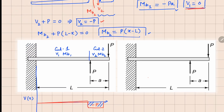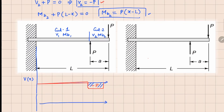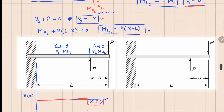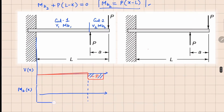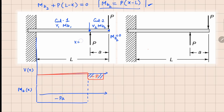Now just below this, let's plot the bending moment M(x). M_b1 equals minus Pa, so we plot that value here. M_b2 equals P times (x minus L). There are two points where we can evaluate M_b2: at x equals L, M_b2 equals zero; and at x equals L minus a, substituting gives M_b2 equals minus Pa, which is the same value. So at x equals L we have zero and we connect these two points — that is the bending moment diagram.